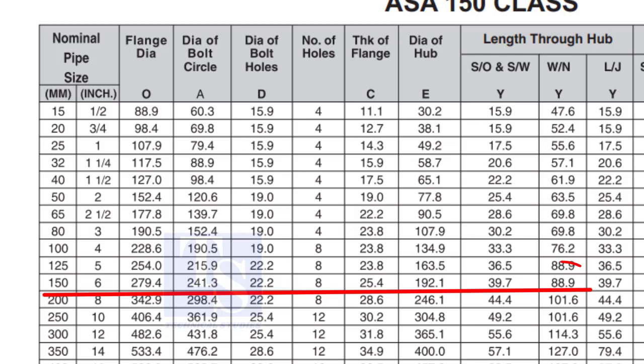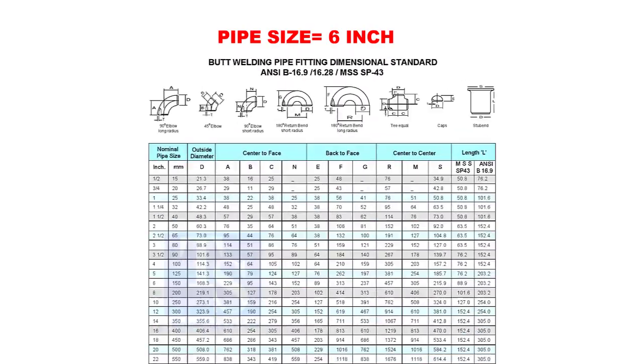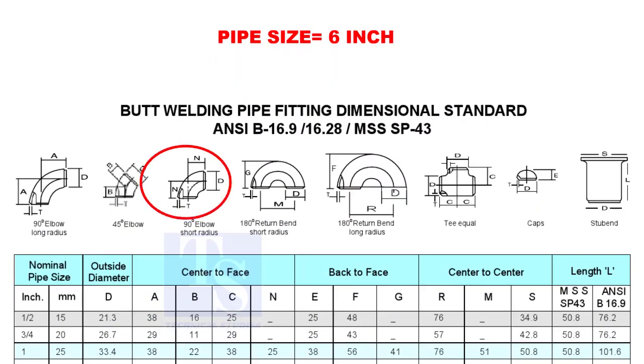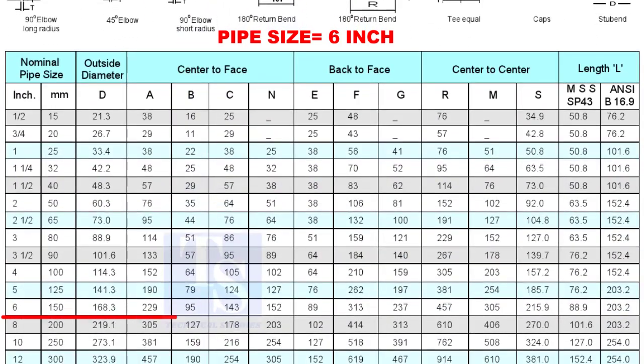Check the height of the flange in the table. Since the pressure rating is 150, the height of the flange is 88.9 millimeters. Note down the height. Check the takeoff length of the elbow. It is 229 millimeters.